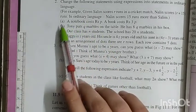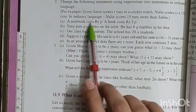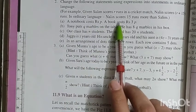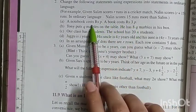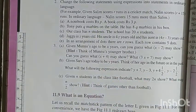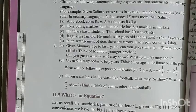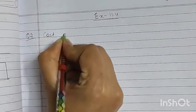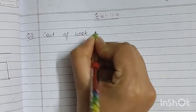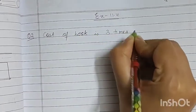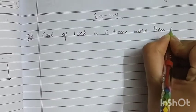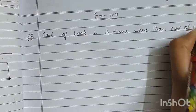Let's start our question. Part A: A notebook costs rupees P, a book costs rupees 3P. Notebook ki cost P rupees hai aur book ki cost 3P rupees hai. Toh isko ordinary language mein hum likhenge ki book ki cost notebook ki cost se 3 times zyadha hai. So we write: cost of book is 3 times more than cost of notebook.